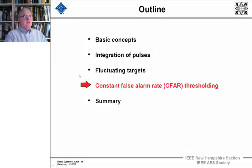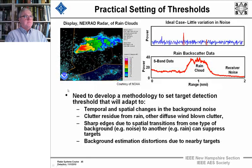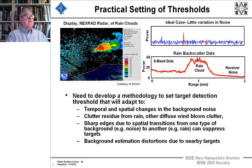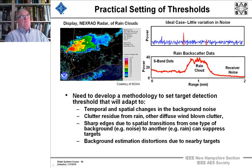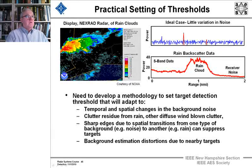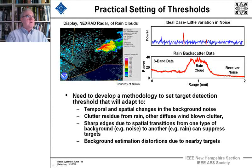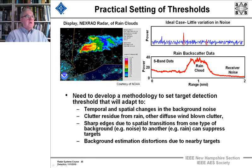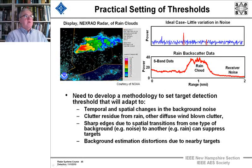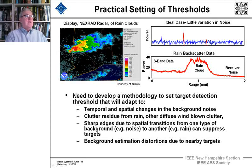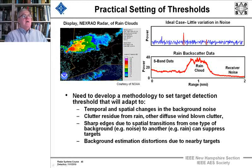Let's move on to the issue of constant false alarm rate thresholding. Here we see a NEXRAD image of a rain cloud — a color image of rain intensity from the NEXRAD radar at New York City. It's a very strong image; the different colors are each 5 dB apart, so the rain here is easily 20 dB over the background.